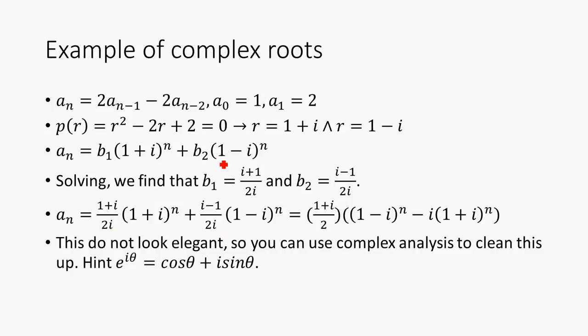So with complex roots, we can use this system here: a_n equals 2*a_(n-1) minus 2*a_(n-2). And we have our initial conditions here. So we get our characteristic equation by performing that substitution, p(r), and we see that the roots become 1 plus or minus i.